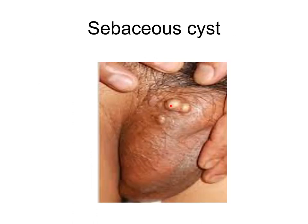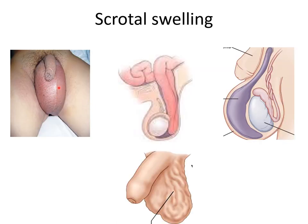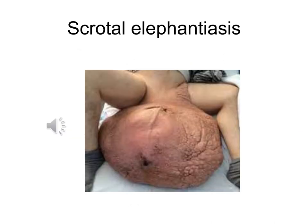Applied aspects of the scrotum: Sebaceous cysts are very common in the scrotum as it is a hairy region, and they are seen in multiple numbers. Scrotal swellings are also common and can be due to hernia, hydrocele, varicocele, testicular cancer, direct trauma, skin infection, or rarely congestive heart failure. Elephantiasis is caused by the worm Wuchereria bancrofti, which breeds in lymphatic vessels; in the lymphatic vessels of the scrotum these worms block the lymphatic channels, causing interstitial fluid to accumulate in the scrotal wall, leading to massive enlargement of the scrotum.